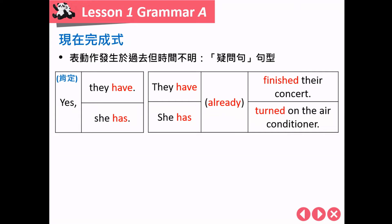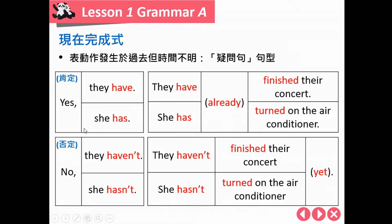至于回答，肯定的时候：刚刚的问句是用 have 开头问，回答的时候就用 have 来回答。Yes, they have already finished the concert. 关于莉莉的句子，Yes, she has already turned on the air conditioner. 这边的句子强调已经做，所以会加上 already。否定句时，把 have 变成 haven't，has 变成 hasn't。